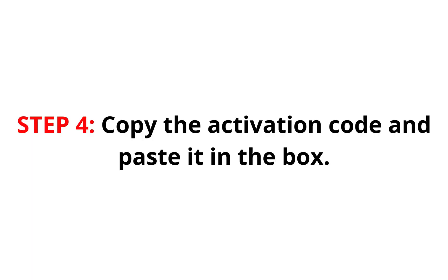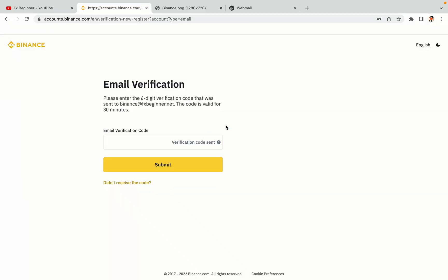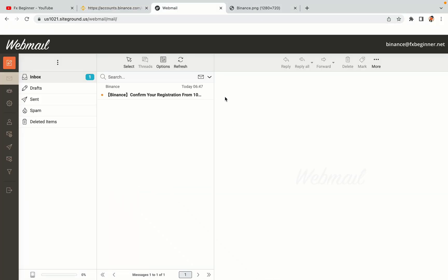Step 4: A confirmation code will be sent to your mail. Open your mail inbox, copy the code and paste it in the box to fully activate your Binance trading account.